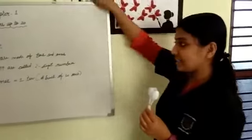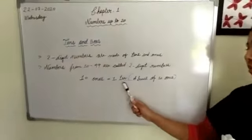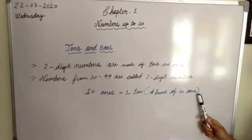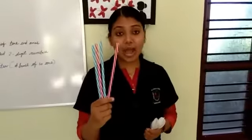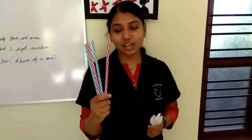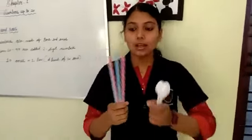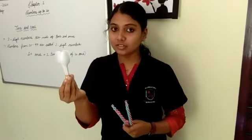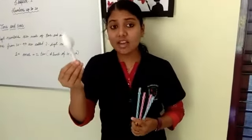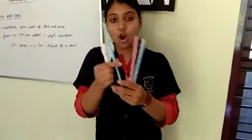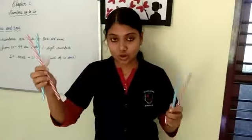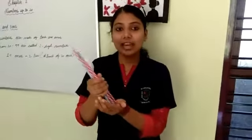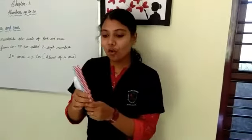So how many spoons do I have? 10 spoons. And how many bundles of spoons? One bundle, which means 1 ten. And 10 ones is equal to 1 ten. 1 ten means a bunch of 10 ones. Students, now I take some straws, so let's count these also. As you all know these are 10 spoons, so we will count forward. What comes after 10? Yes, 11, then 12, 13, and 14. Finally we will get the number 14.